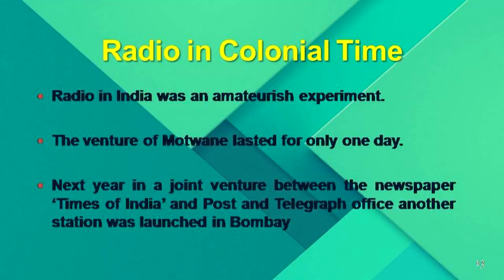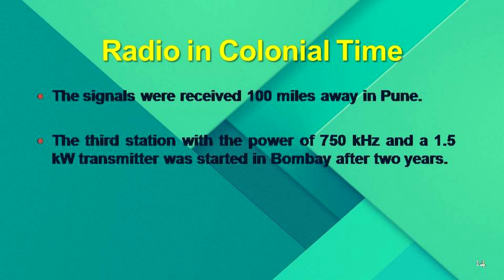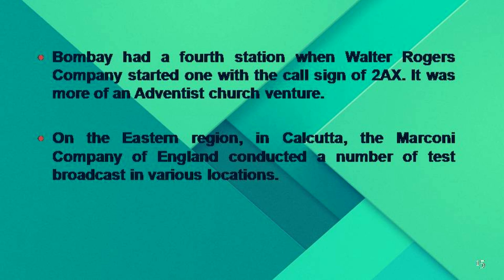Radio in India was an amateurish experiment, and the venture of Motwane lasted only for one day. The next year, in a joint venture between the Times of India and the Post and Telegraph Office, another station was launched in Bombay, with signals received 100 miles away in Pune. A third station with a 1.5 kilowatt transmitter was started in Bombay two years later. Bombay had a fourth station when Walter Rogers' company started one with the call sign 2AX.